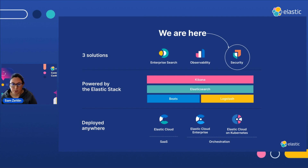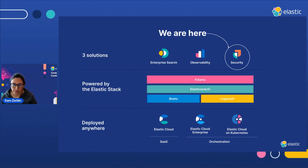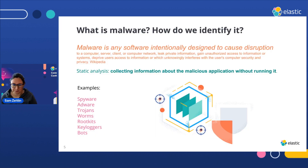As you know, Elastic has three main pillars: search, observability, and security. We're here in the security part of the company, and I'm going to tell you a little bit about a model that we use to detect malware.